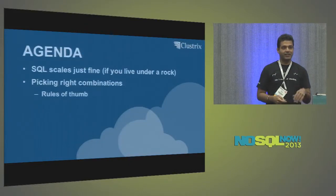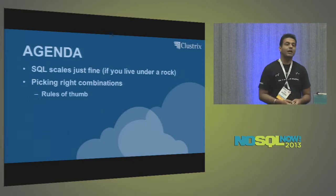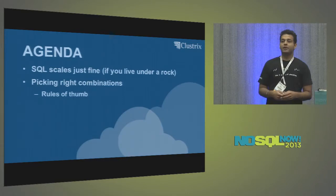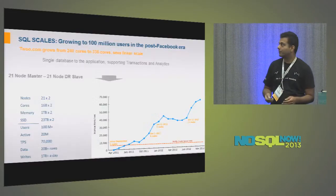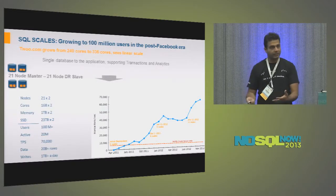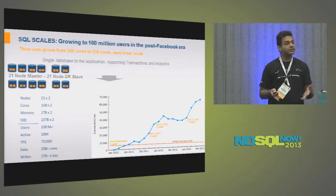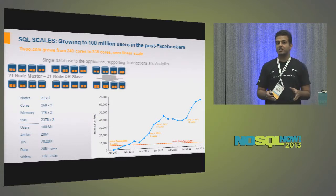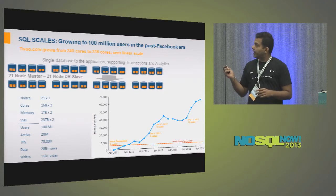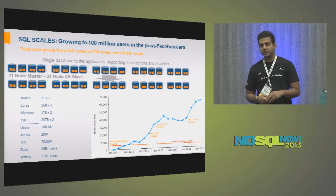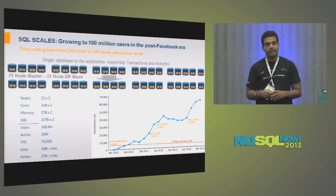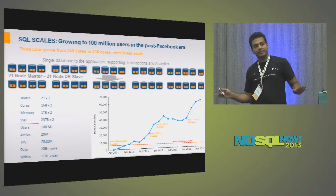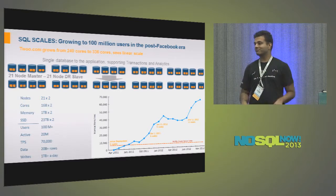The agenda is very simple. First, I'll tell you that SQL scales. Clustrix has a client that has a 336-core deployment. It looks like a single SQL database to the application — does transactions, real-time analytics, everything. They don't do any ETL, and they've been running on Clustrix for over two and a half years. If we go down, their business goes down. They write a terabyte a day, and they've got 100 million users — actually 15 to 20 million active. So SQL scales. If anybody tells you something else, they're lying.